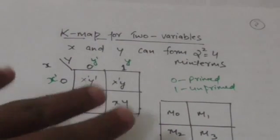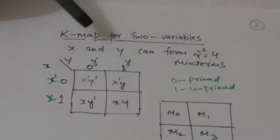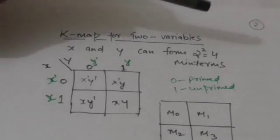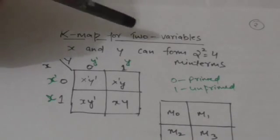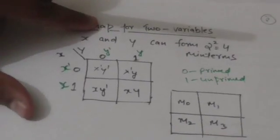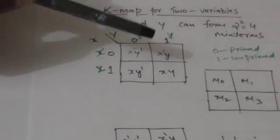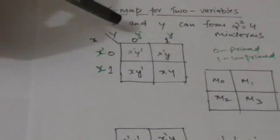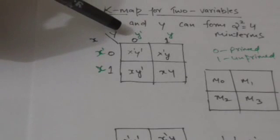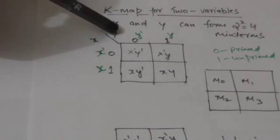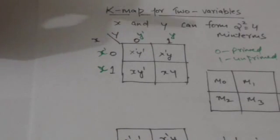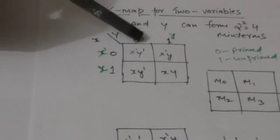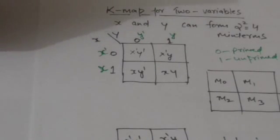Now we will study about the K-map for two binary variables. Let there be two binary variables x and y. Two variables can form four min terms, so the K-map for two variables will have four squares. In this K-map for two variables x and y, the columns are labeled by y and the rows are labeled by x. The numbers 0 and 1 represent the value of the variable.